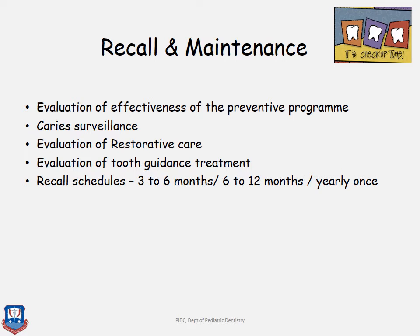In the recall and maintenance phase, the patient is recalled every three to six months, six to twelve months, or yearly, based on oral hygiene and oral health. A child with low caries index is called every six to twelve months or yearly. A child with a high caries index should be called every three to six months for caries surveillance. Recall also evaluates the effectiveness of the preventive program, such as topical fluorides, prophylaxis, or pit and fissure sealants.